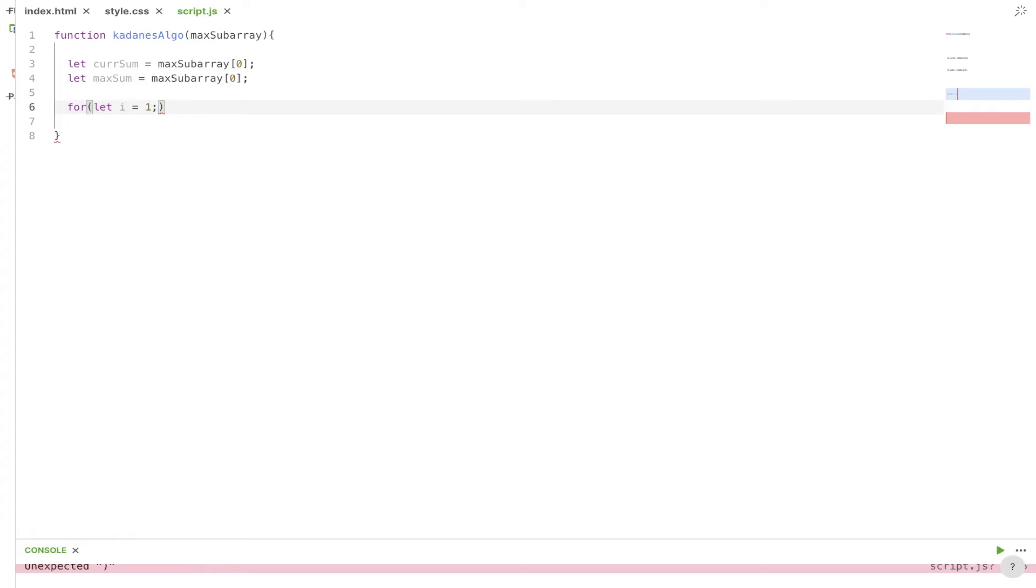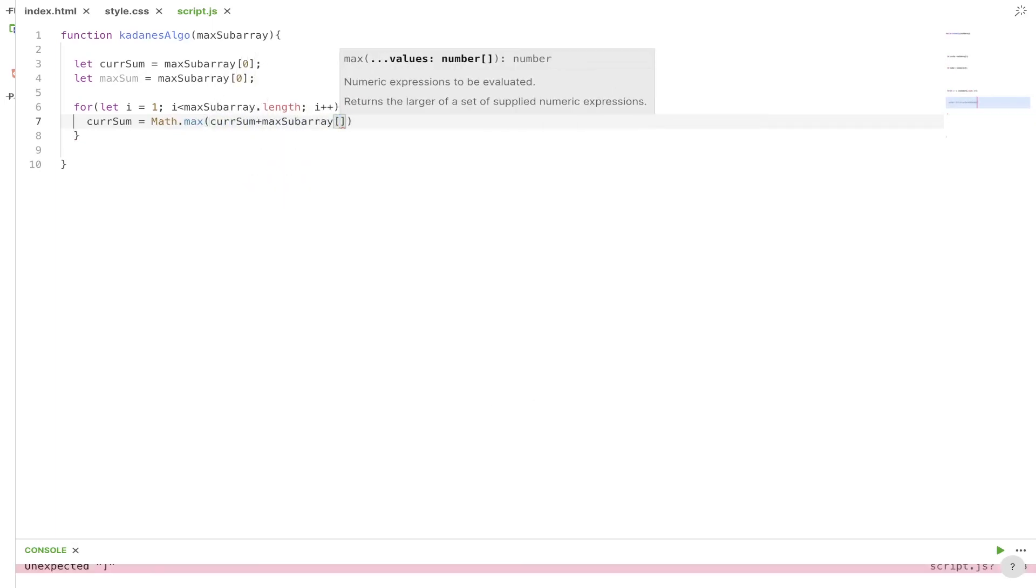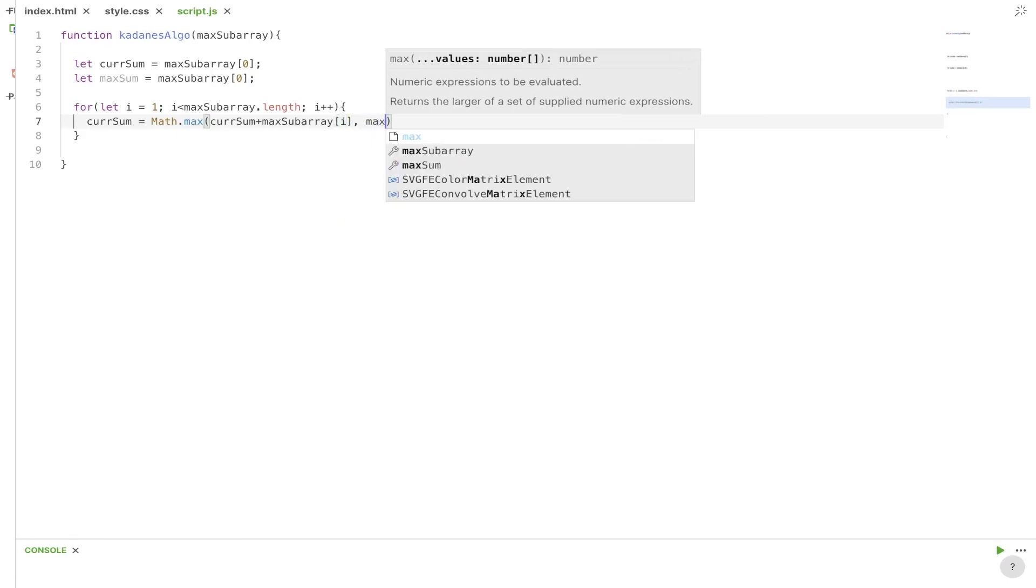Start at position 1 because we've already accounted for position 0. i is less than max subarray dot length, i plus plus. Then rather than utilizing, as we said in the solution, a DP array, what we're going to do is just update the current sum. So current sum is going to be equal to math dot max, current sum plus maximum subarray at i, or just the max subarray at position i.